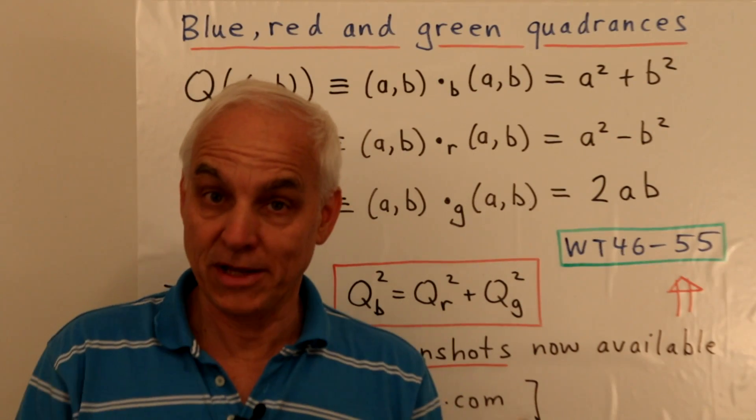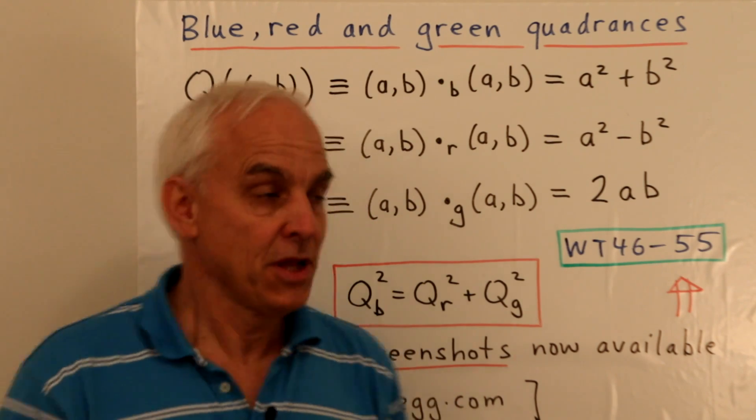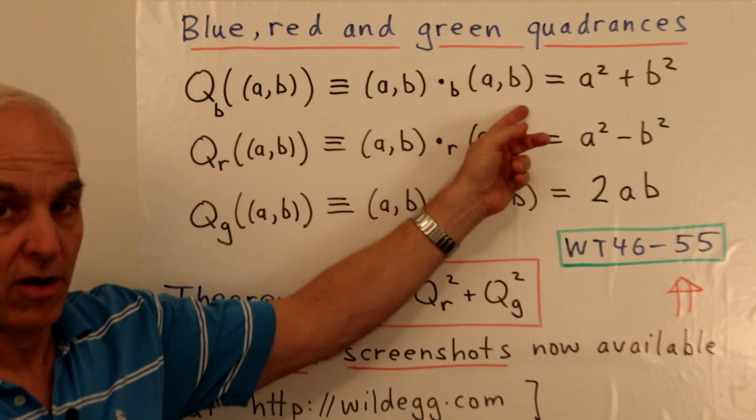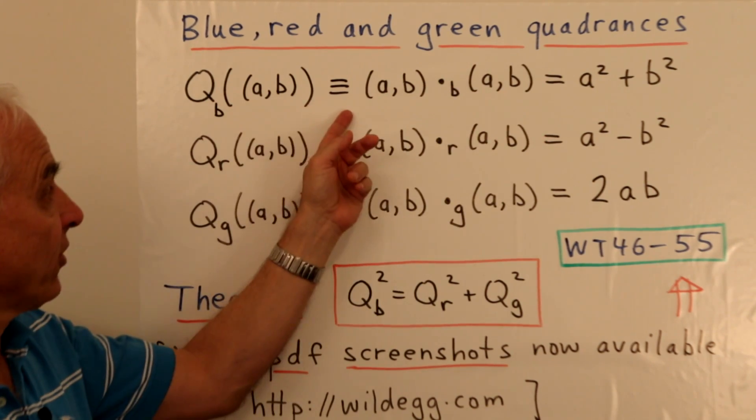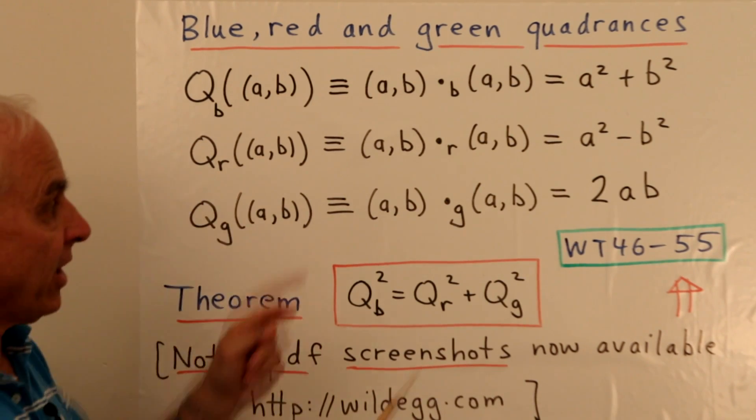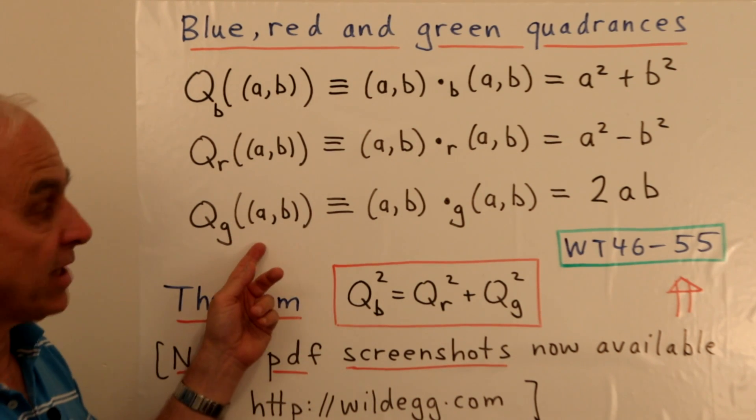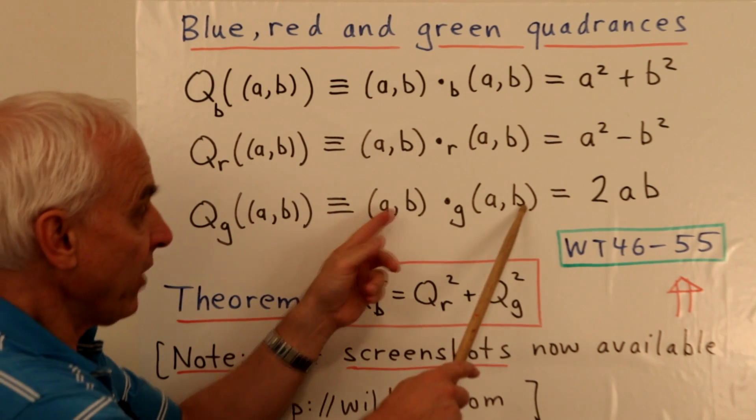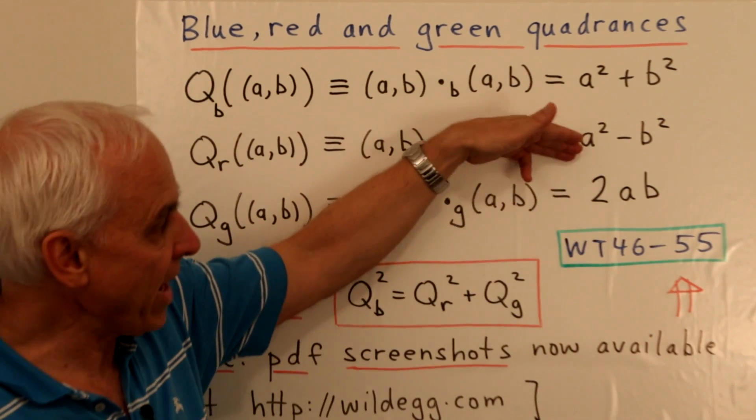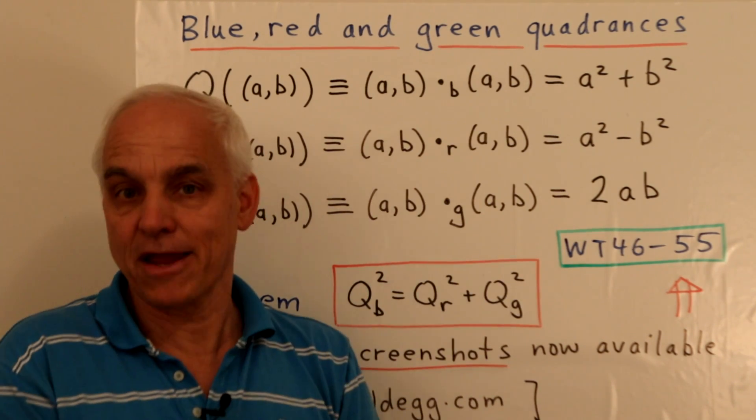What do we do with these three interesting dot products? The first thing is we define quadrants of vectors. The quadrants of a vector is just the vector dotted with itself. In the blue case, the quadrants of the vector (a,b) is a² + b². In the red case, it's a² - b². And in the green case, it's ab + ab, which is 2ab. The red and green quadrants replace the blue quadrants in a relativistic setting.